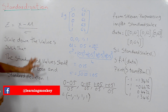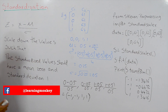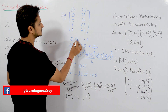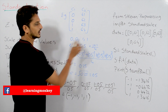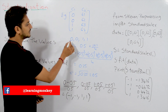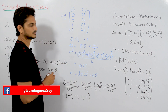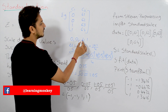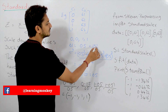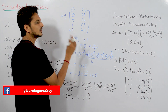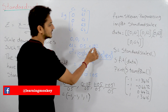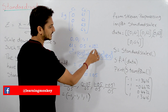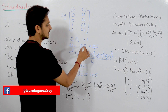Let's take an example. Column 1 has values 0, 0, 1, 1. What is the mean of these values? 1 plus 1 divided by the total number of values, which is 4. So 2 divided by 4 means the mean is 0.5.